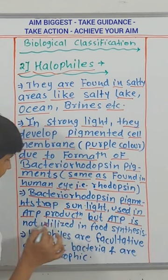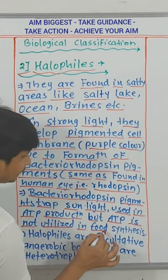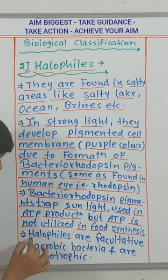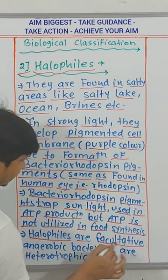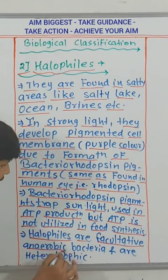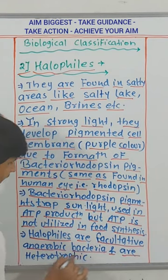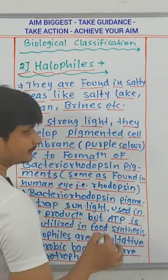Bacteriorhodopsin pigment traps sunlight used in ATP production, but this ATP is not utilized in food synthesis. Halophytes are facultative anaerobic bacteria and are heterotrophic.